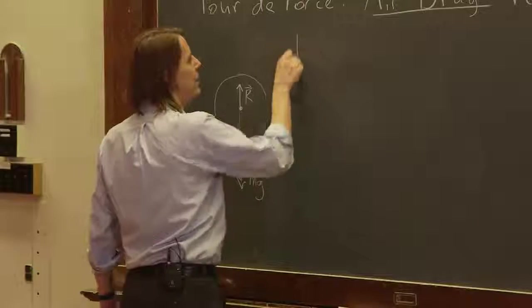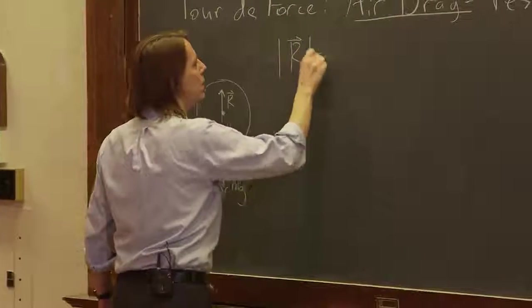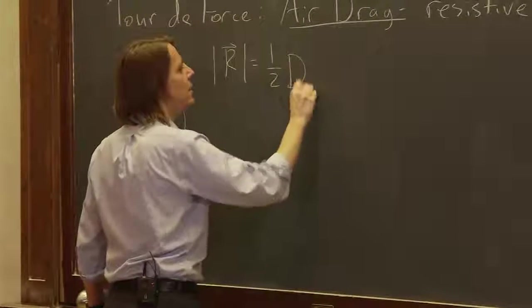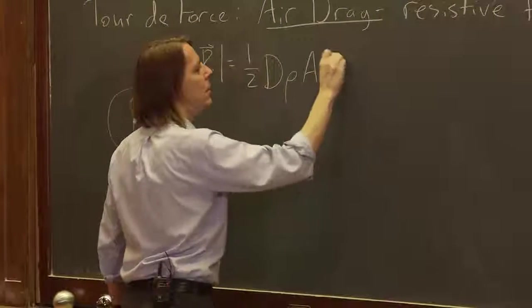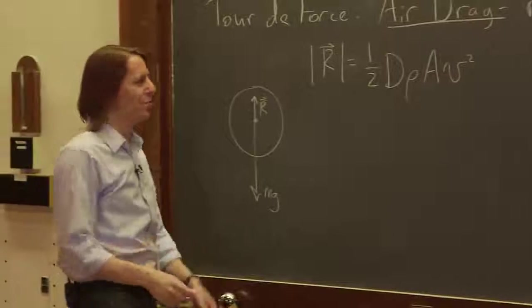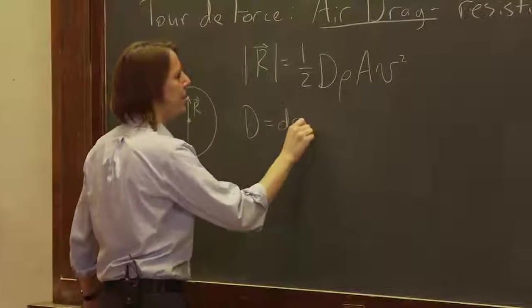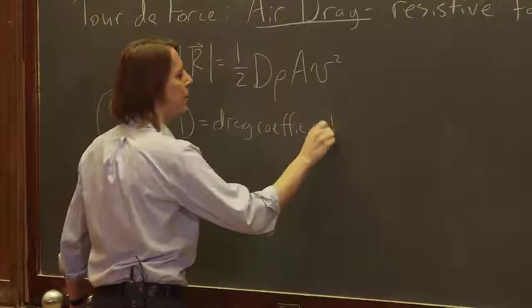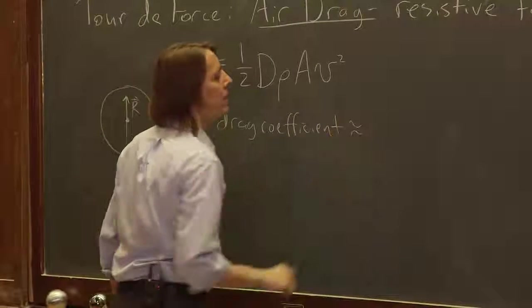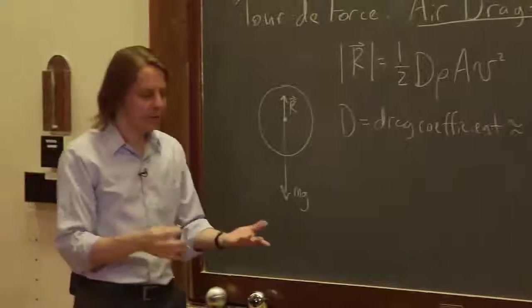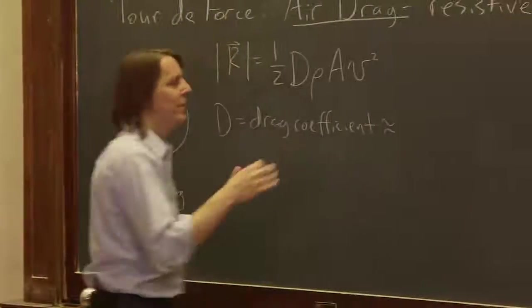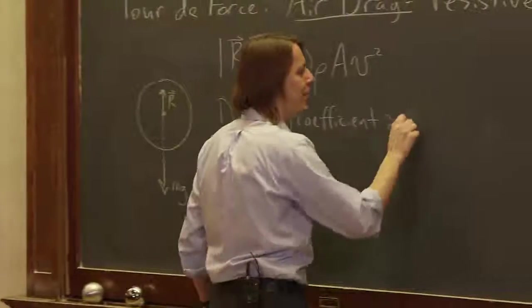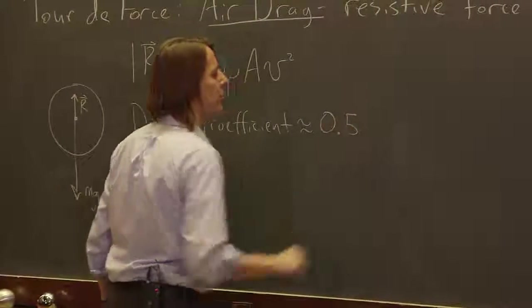So the magnitude of the resistive force is one half D rho A v squared. D is the drag coefficient, it's just a number that kind of depends on the geometry, and also depends on how fast you're going and the atmospheric conditions and whether it's laminar or turbulent. But under these typical drop conditions, it's about a half.